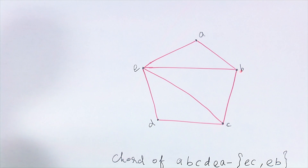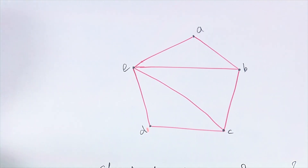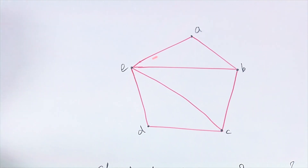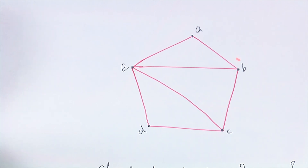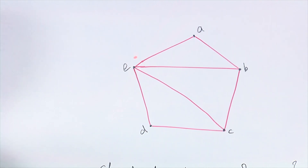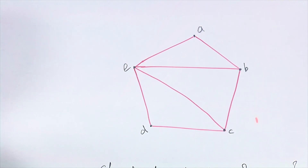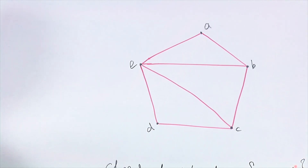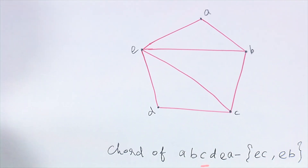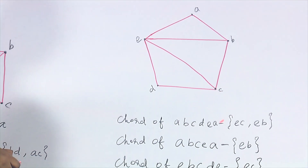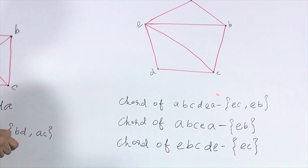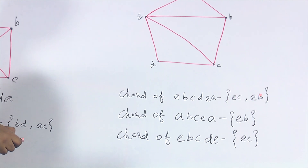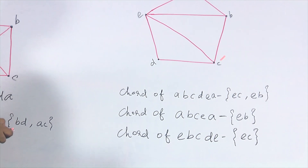In this cycle of length 5, how many chords do we have? We have two chords, namely E–B and E–C. So E–C and E–B are the chords for this cycle. We consider this cycle of length 5 and it has two chords. There is no other cycle of length 5, so we move to the cycles of length 4.